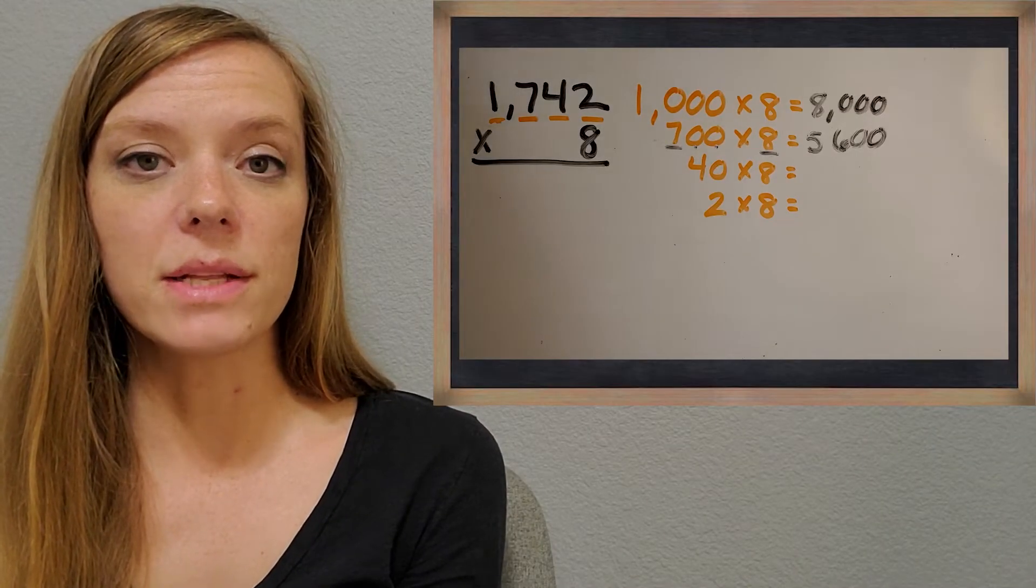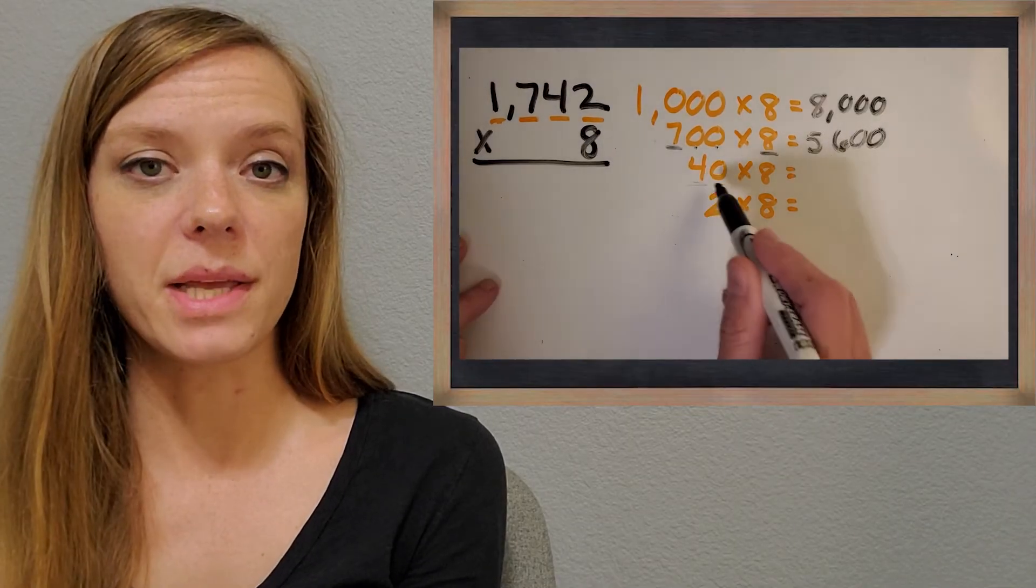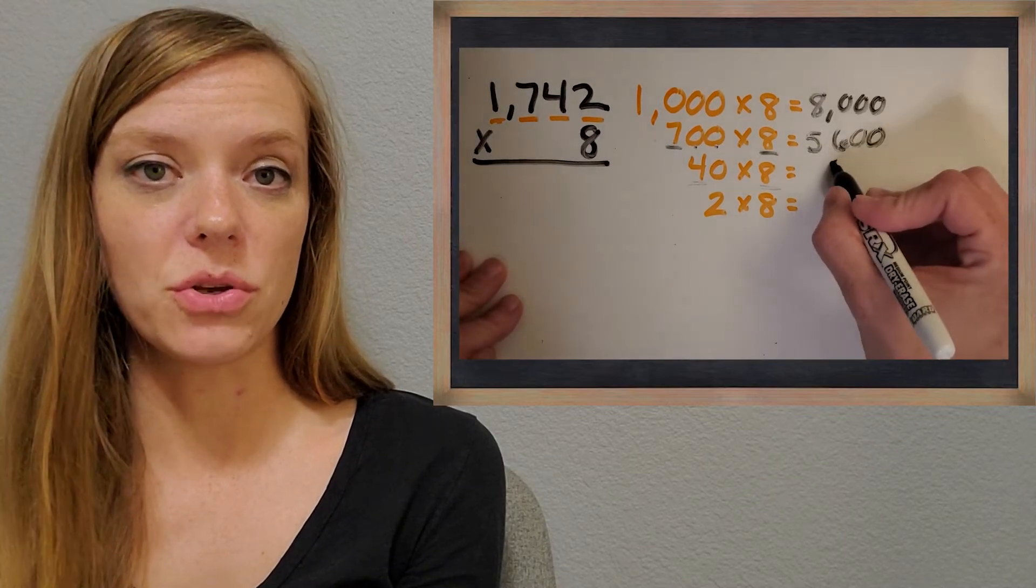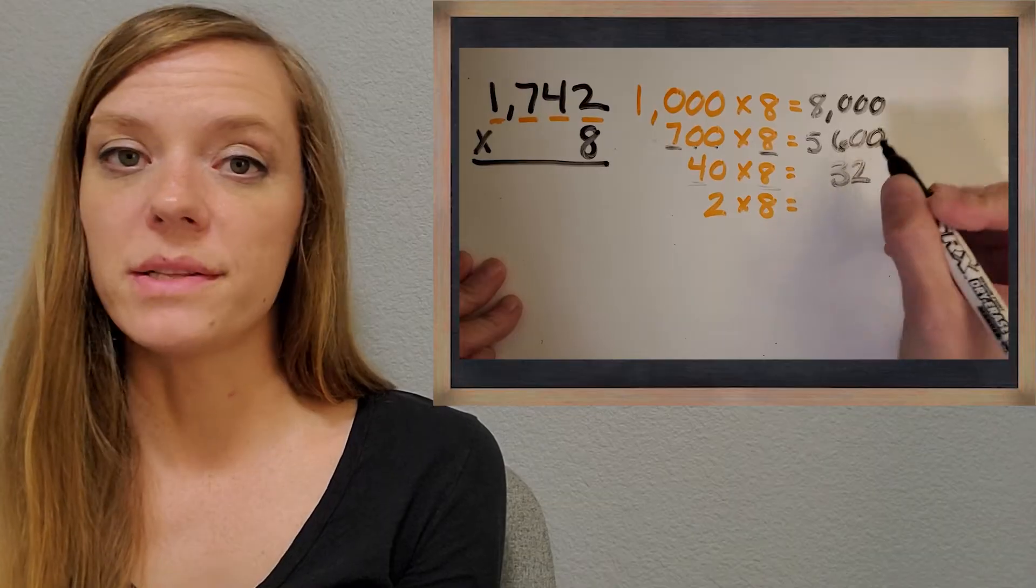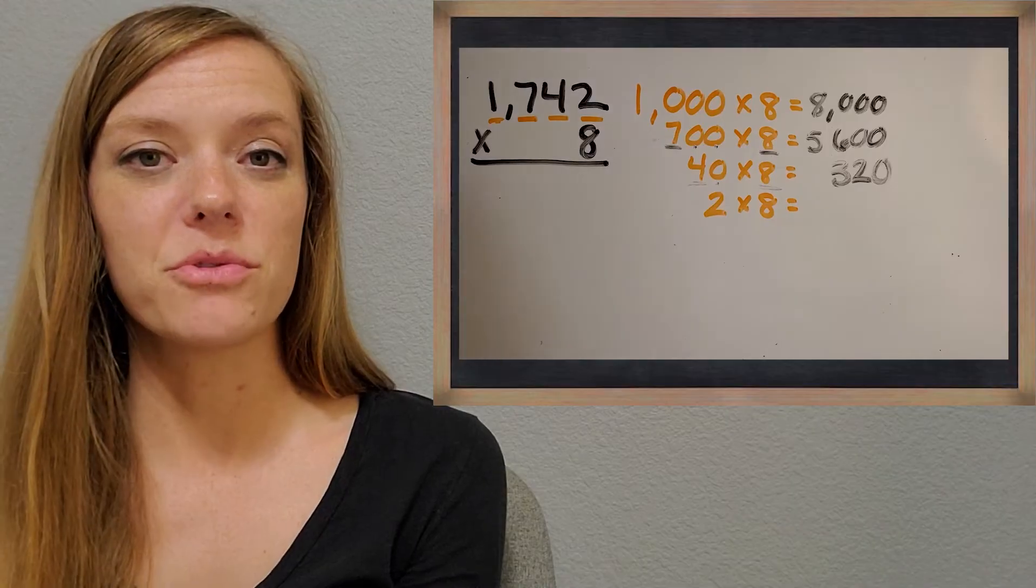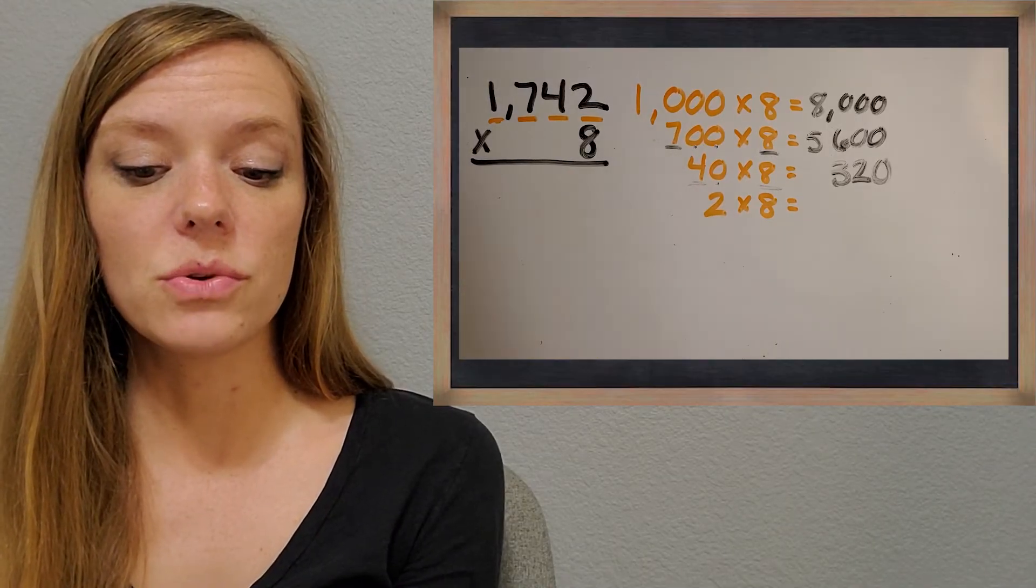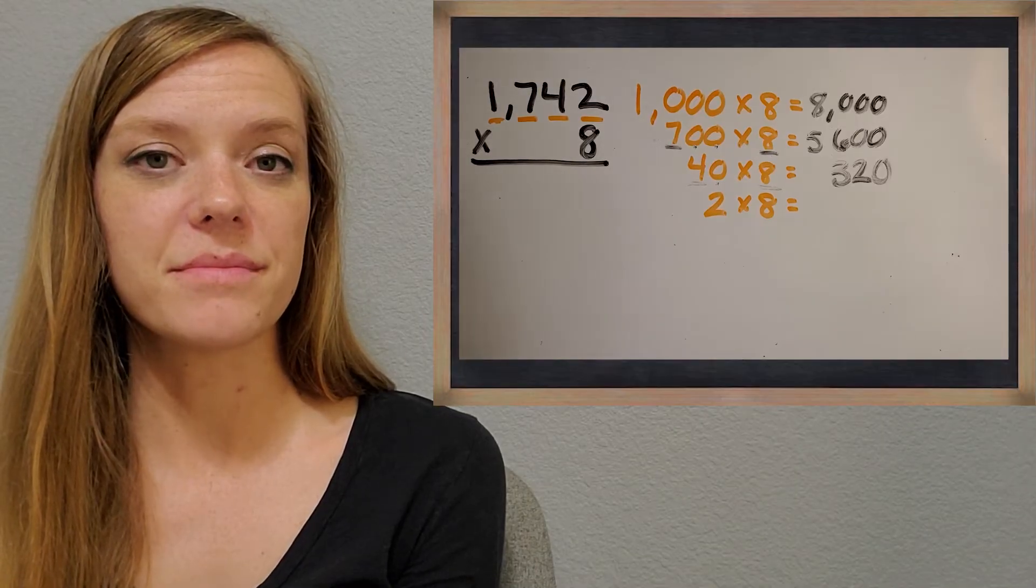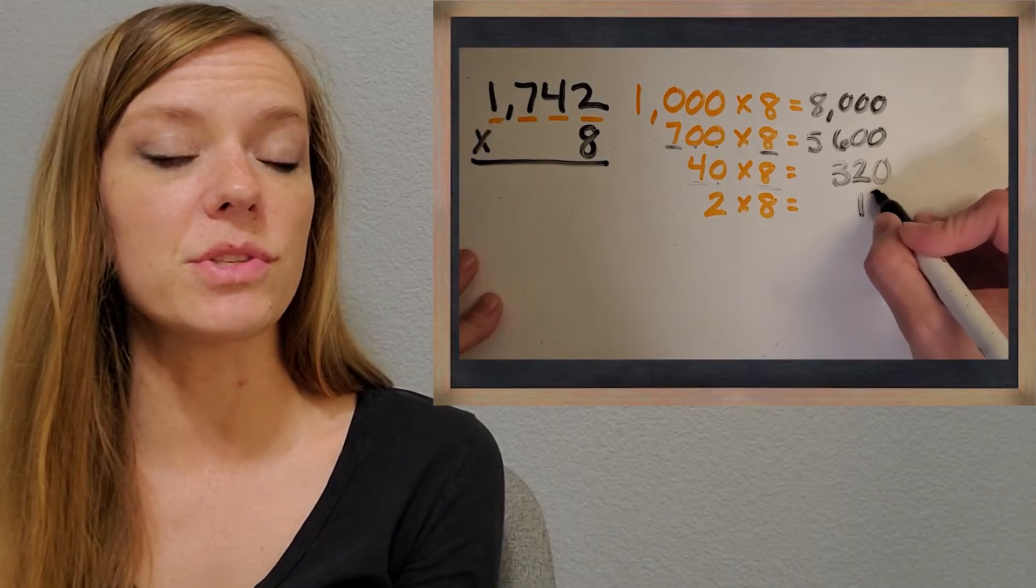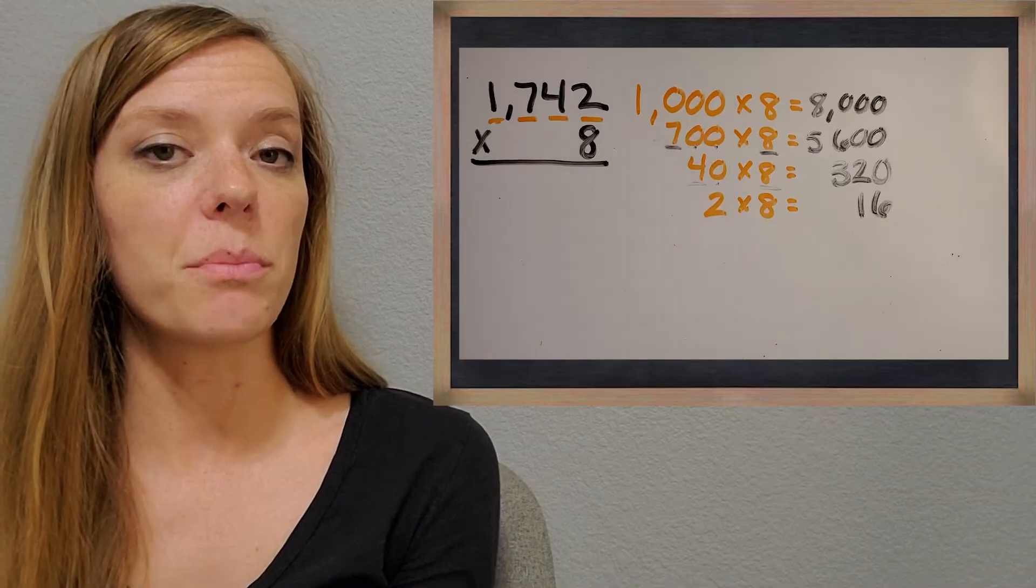And now let's get the next part of the answer. So what is four times eight? We can do that strategy again. Awesome, 32. And then there's just one zero. So I'm going to stick one zero in my answer. So 320. Then the last one is two times eight. What is two times eight? Awesome, 16. And there's no zeros in those two factors that we're multiplying. So we're not going to put a zero in our product.